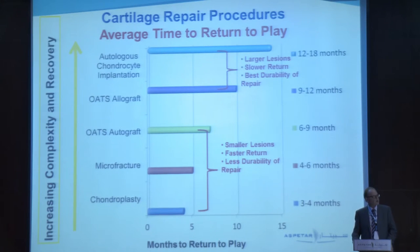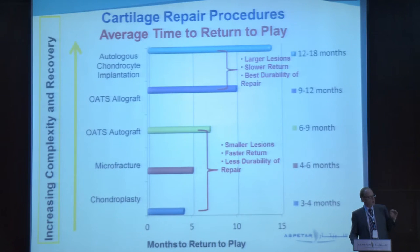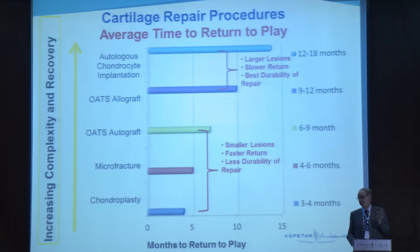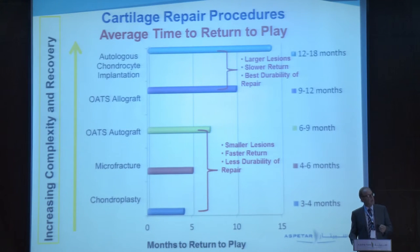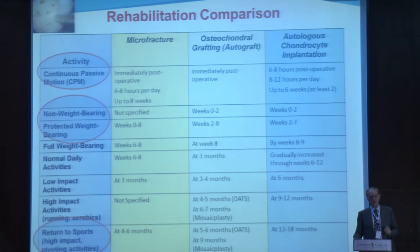Looking at the timeline for return to play, increasing complexity is at the top — more patient involvement, more difficult for the surgeon. The easiest options are on the bottom: chondroplasty and microfracture, then OATS autograft and OATS allograft, and you can see how the time changes. It can vary from four to six months for chondroplasty and microfracture, up to 12 to 18 months for ACI. However, the cellular repairs — ACI and OATS allografts — give the best durability. If you just want a quick return for a season or two, microfracture will be fine for average-size defects, but from a longevity standpoint, durability is what we really need.